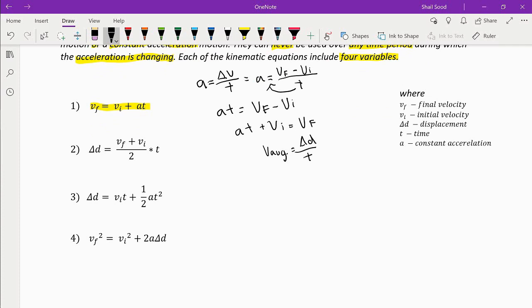Average velocity can also be written as the final velocity plus the initial velocity divided by 2, equal to displacement over time. If we multiply time by both sides, this crosses out and you get our second kinematic formula.